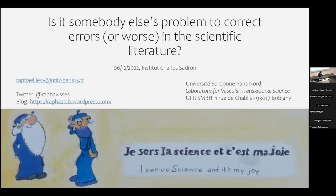The title of my talk is: 'Is it somebody else's problem to correct errors or worse in the scientific record?' We always say that science is self-correcting. But what does that actually mean in practice? Who is doing the self-correction of science? Having done my PhD and studies in physics and my PhD in physical chemistry, why did I end up asking this kind of question?